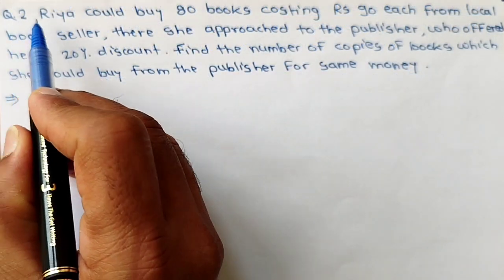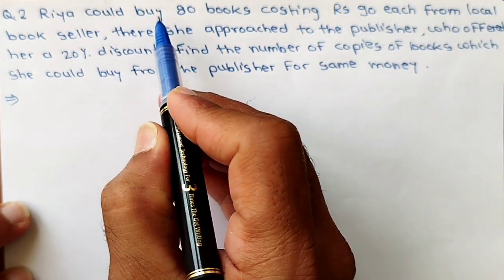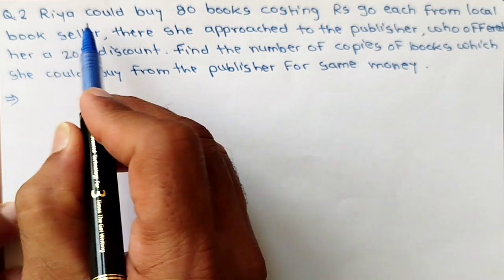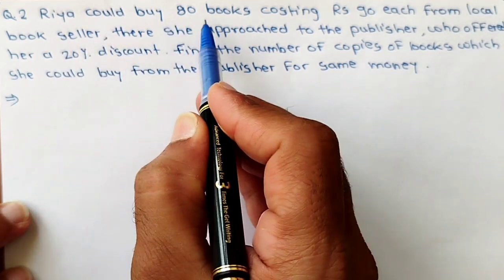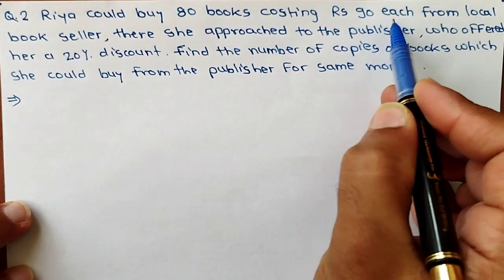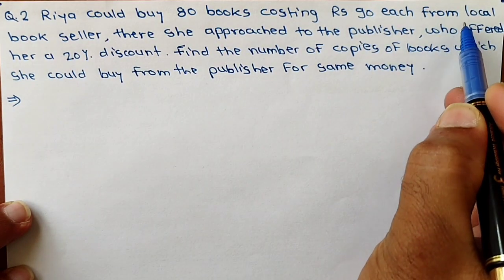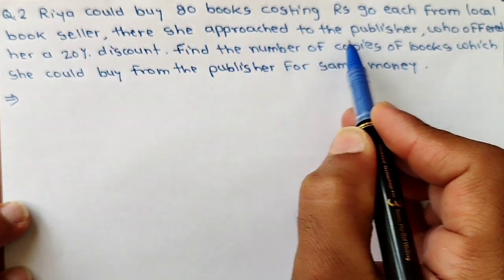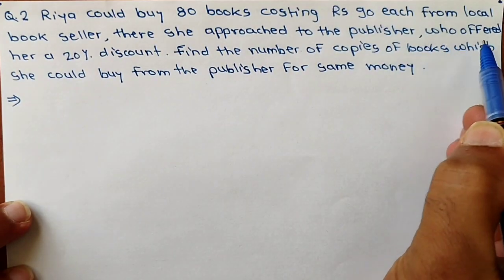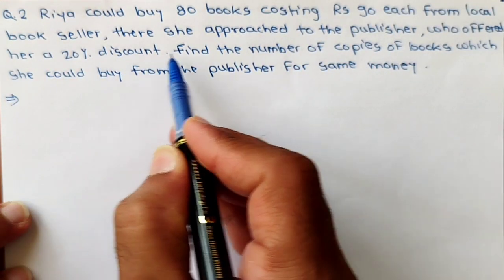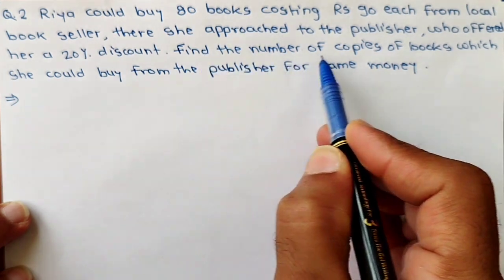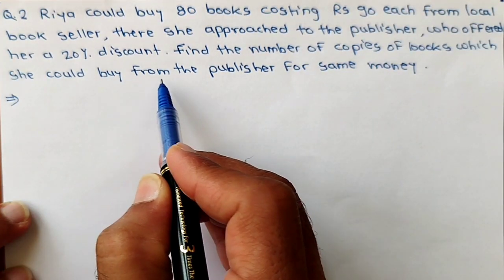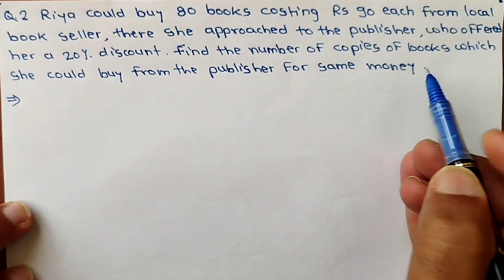This is practice question number two for chapter Direct and Inverse Proportion, class 8 mathematics. The question is: Rhea could buy 80 books costing Rs 80 each from the local bookseller. She then approached a publisher who offered her a 20% discount. Find the number of copies she could buy from the publisher for the same money.